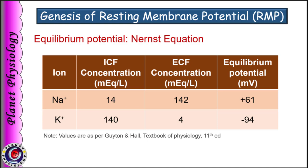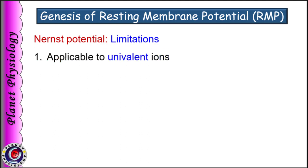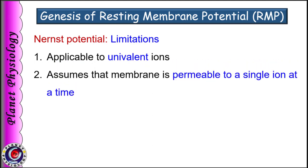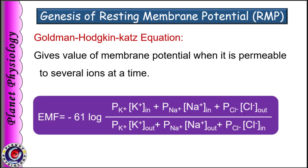Now, as we have studied the Nernst equation, you must have realized its limitations. First, the Nernst potential is applicable only to univalent ions. Second, it assumes the membrane is permeable to a single ion at a time. Third, it does not consider differences in membrane permeability to various ions. Hence, to overcome these challenges, Goldman, Hodgkin, and Katz have given another equation by considering the concentration gradient as well as membrane permeability for several ions simultaneously.